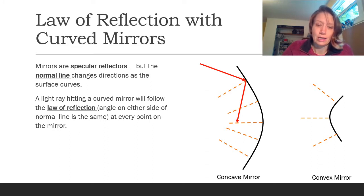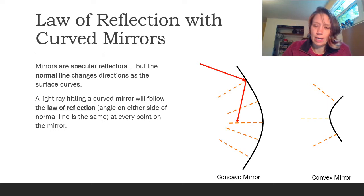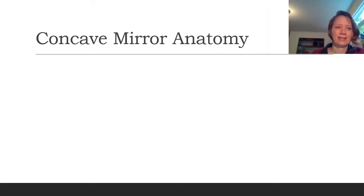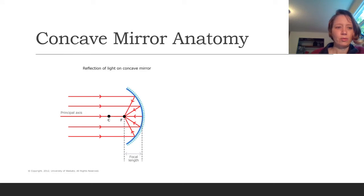The tricky thing is that those reflections look different everywhere because the normal lines are changing. On the concave mirror, I've drawn one reflection showing the incident ray and reflected ray. On the convex mirror, a similar incoming ray reflects somewhere really different because the normal line is angled differently. The rest of this video will focus on concave mirrors specifically; there will be another video for convex ones.